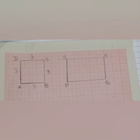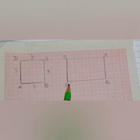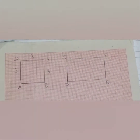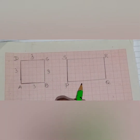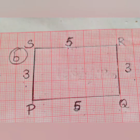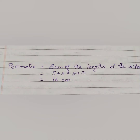Next, we are going to find the perimeter of a rectangle. I have drawn a rectangle in the graph paper and named it PQRS. I have counted all the squares: PQ is 5 cm, QR is 3 cm, RS is 5 cm, and SP is 3 cm. Adding all of these, we get 16 cm. So, the perimeter of the rectangle is 16 cm.